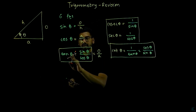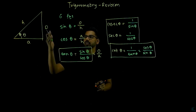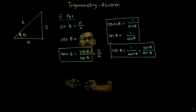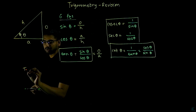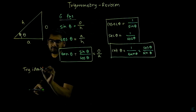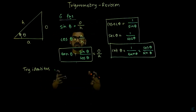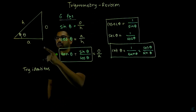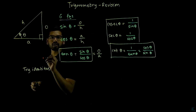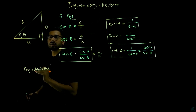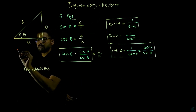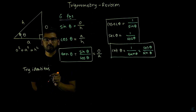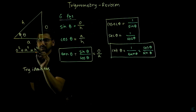Next, after the six trigonometric functions, you study trigonometric identities. These are the first formulas of trigonometry. Where do the first formulas come from? According to Pythagoras' theorem, in a right angle triangle, the sum of the squares of the two shorter sides equals the square of the hypotenuse. So: opposite squared plus adjacent squared equals hypotenuse squared.